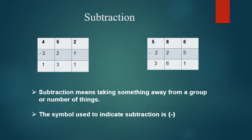First sum: in the units place, we have 2 and 1. 2 minus 1 is 1. In the 10s place, we have 5 and 2. 5 minus 2, we get 3. Then in the 100s place, we have 4 and 3. 4 minus 3, we get 1. So the answer is 131.